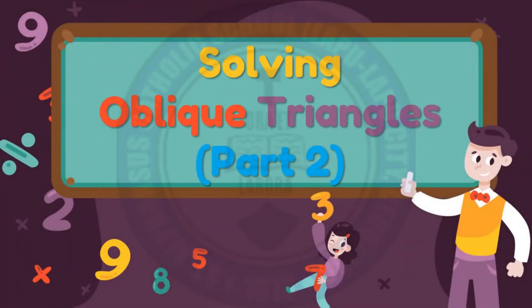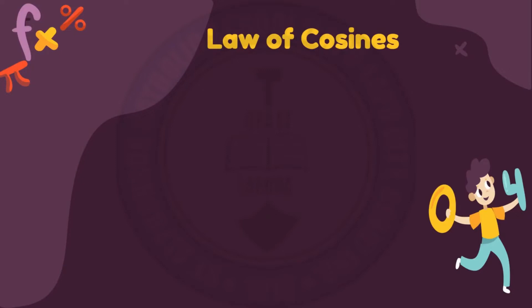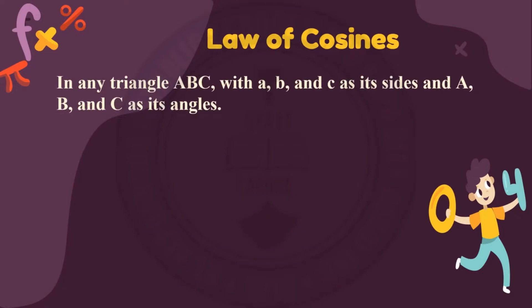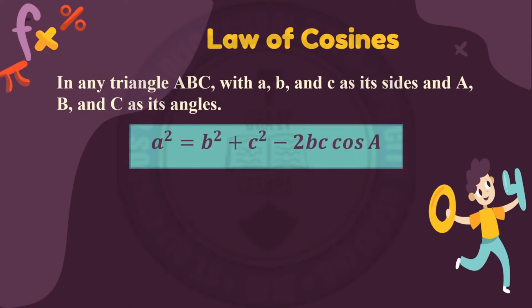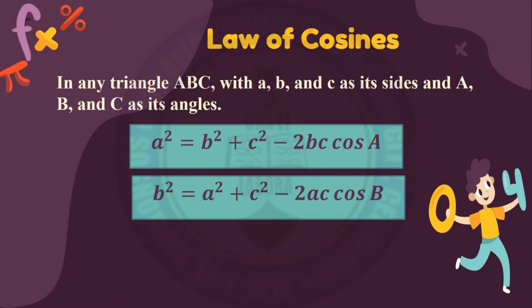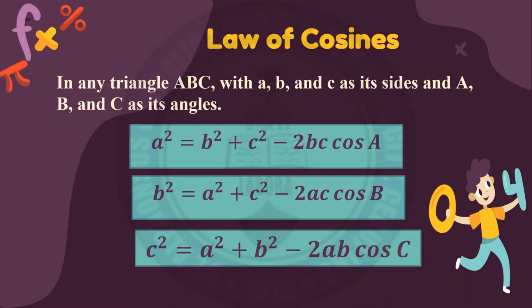Solving oblique triangles part 2. In this video you will continue learning how to solve oblique triangles using the law of cosines. In any triangle ABC with a, b, and c as its sides and A, B, and C as its angles: a² = b² + c² − 2bc·cos A; b² = a² + c² − 2ac·cos B; and c² = a² + b² − 2ab·cos C. With this law of cosines we can solve oblique triangles.